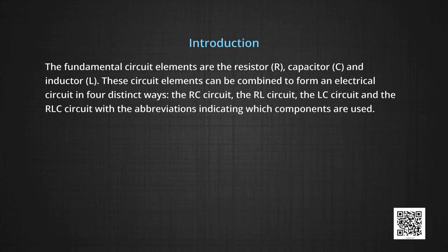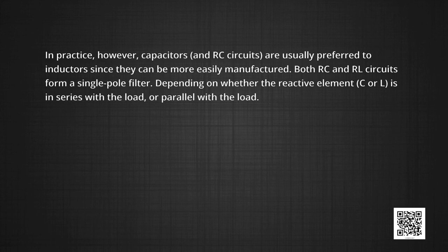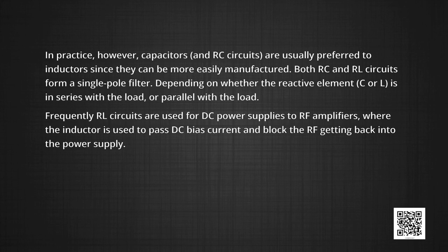The fundamental circuit elements are the resistor, capacitor, and inductor. These circuit elements can be combined to form an electrical circuit in four distinct ways: as RC circuit, RL circuit, LC circuit, and RLC circuit. In practice, capacitors are usually preferred to inductors since they can be more easily manufactured. Both RC and RL circuits form a single pole filter depending on whether the reactive element C or L is in series or parallel with the load. RL circuits are used for DC power and also in RF amplifiers, where the inductor is used to pass DC bias current and block the RF back into the power supply.